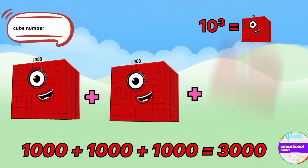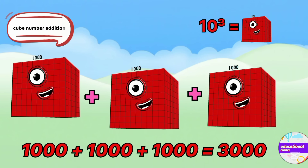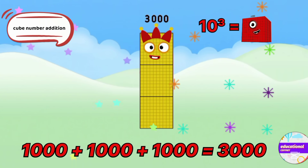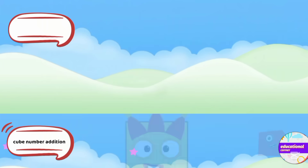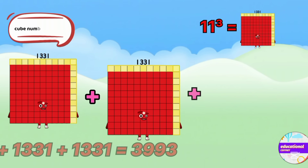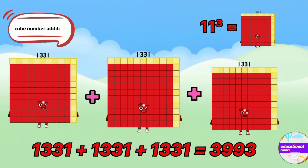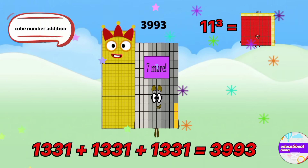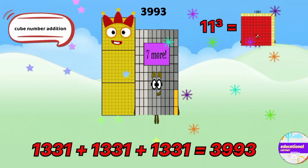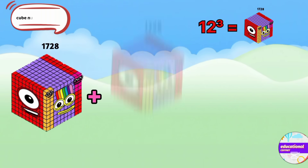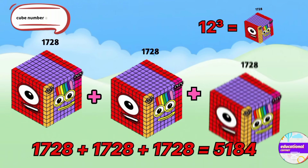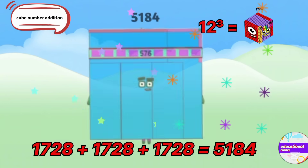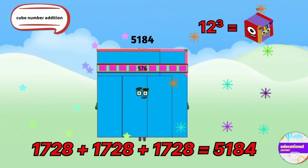The cube of 10 is 1000. Add 1000 three times, the answer is 3000. The cube of 11 is 1331. We add 1331 three times, the answer is 3993. The cube of 12 is 1728. If we add 1728 three times, the answer is 5184.